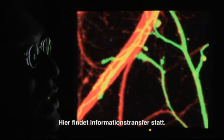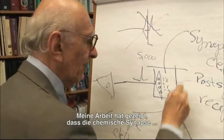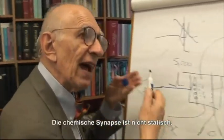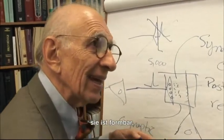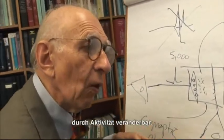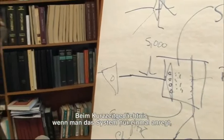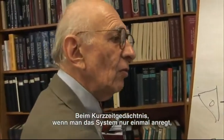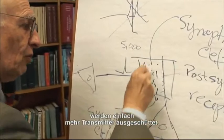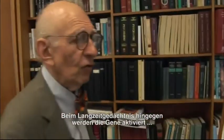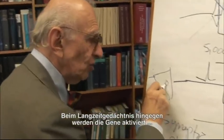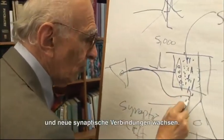That's where information transfer occurs. My work has shown that the chemical synapse is the key to understanding learning and memory. The chemical synapse is not fixed — it is plastic. It can be altered by activity. In short-term memory, when you activate the system only once, you just increase the function, so you release more transmitter. In long-term memory, you actually turn on genes and grow new synaptic connections.